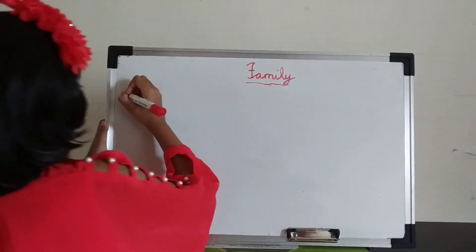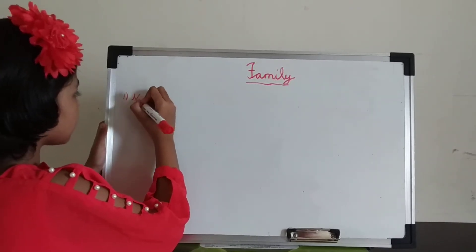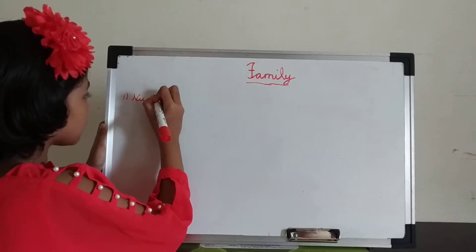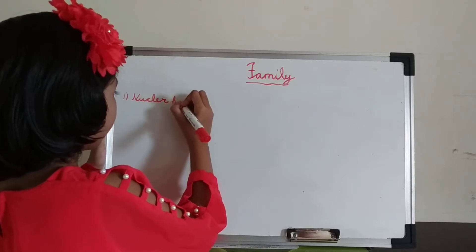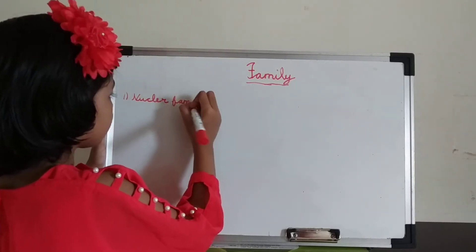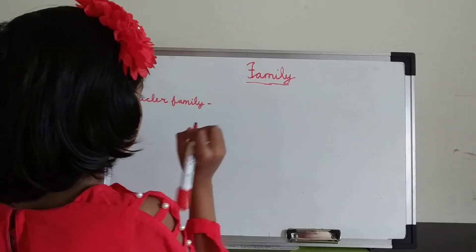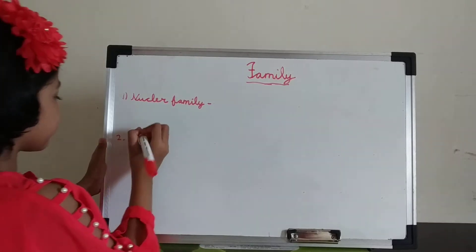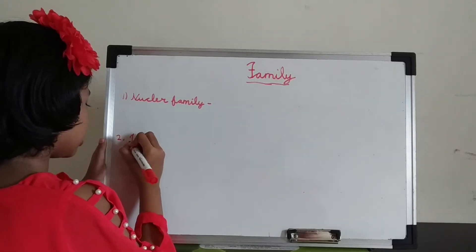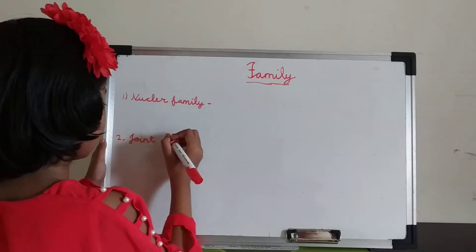There are two types of family, friends. First is nuclear family. Second is joint family.